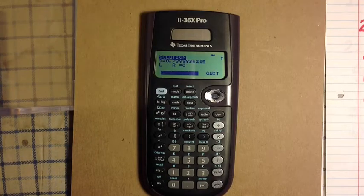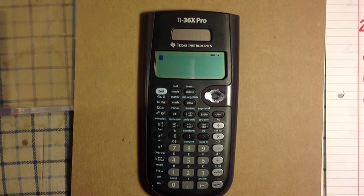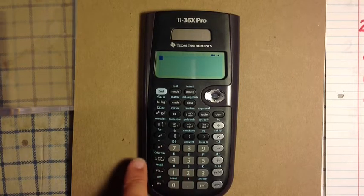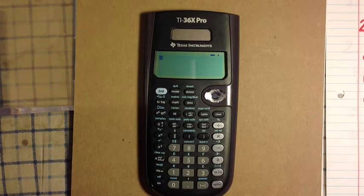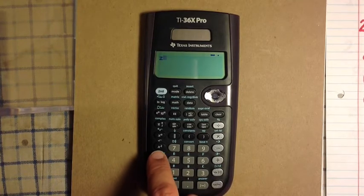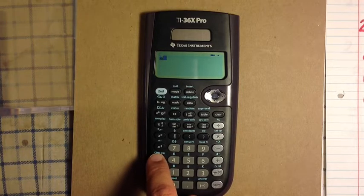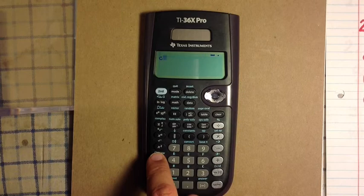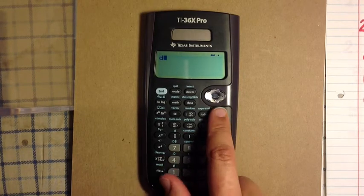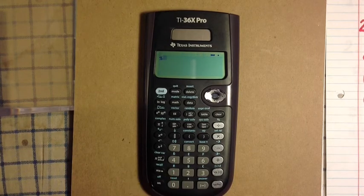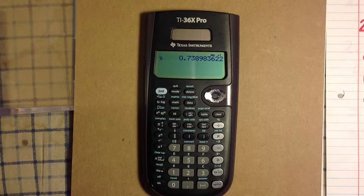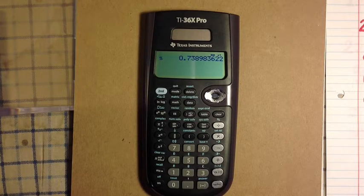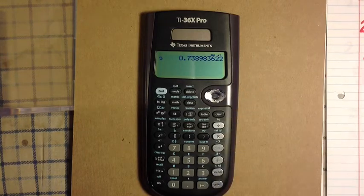I am going to select quit now and press enter. And see this variable key, which is above the store key here? Pressing this variable key cycles through the eight available registers: X, Y, Z, T, A, B, C, D. So I'm going to clear that, and if I press the variable key once, I get x, and I hit enter, I get that root. I get 0.738983622, the root I just solved for. Now I can use this information to get the coefficients for my reduced cubic.